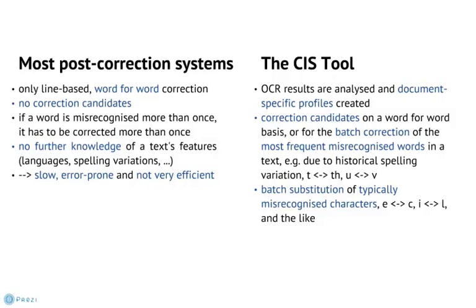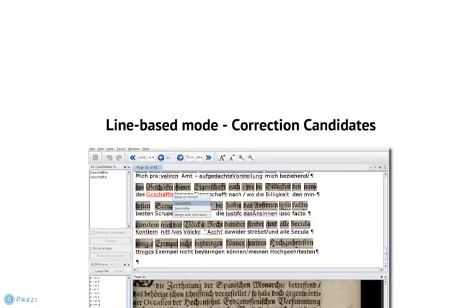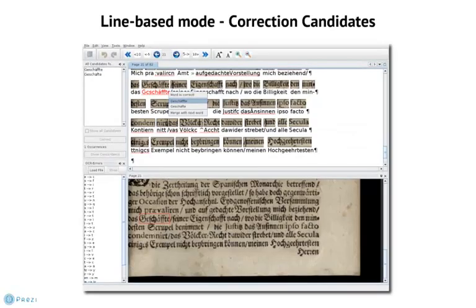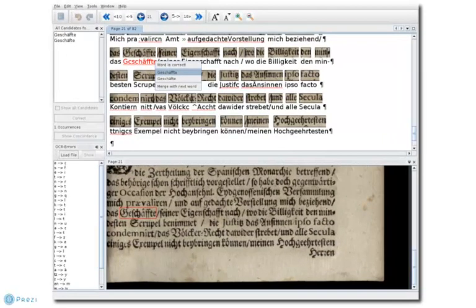The error profiles, on the other hand, contain information on repeatedly misrecognized words and error patterns common in the text. For example, OCR software often has problems telling apart the characters small e and c, an i and an l, or n and u, because for the software they just look too similar. Based on these profiles, the tool marks potentially misrecognized words and gives correction candidates on a word-for-word basis.